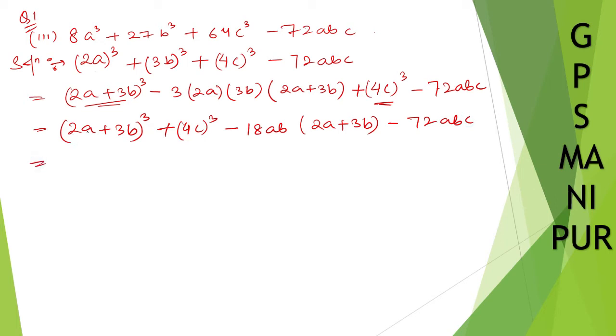Now 2a plus 3b, take this one whole as a and this one whole as b. So, a cube plus b cube formula will be 2a plus 3b plus 4c, a plus b. a square, so let me put the curly braces.